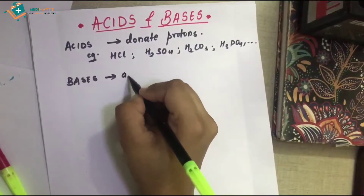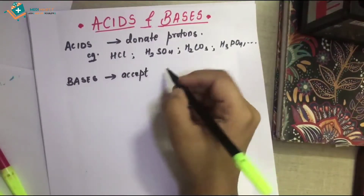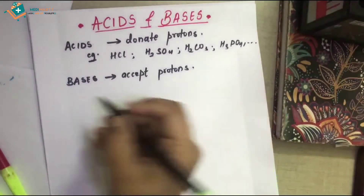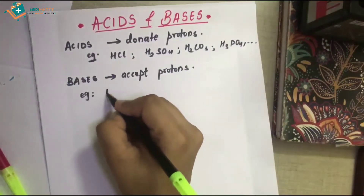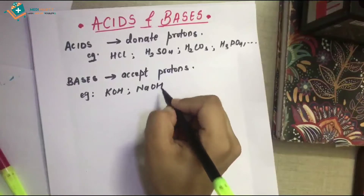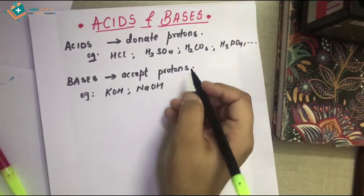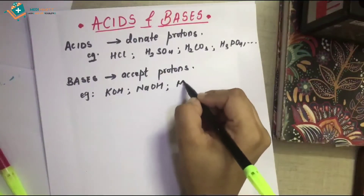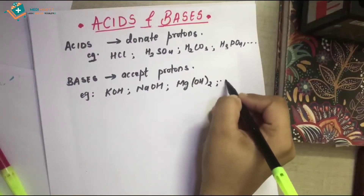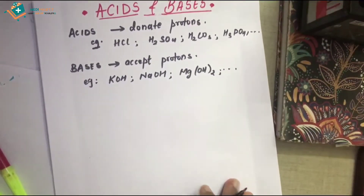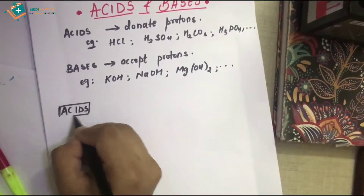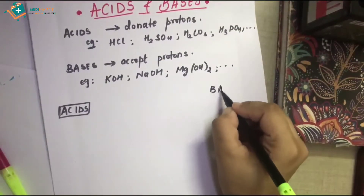Now, what are bases? Bases actually accept protons. They are like poor people who accept from the rich. Examples include potassium hydroxide, sodium hydroxide, CO₃²⁻, magnesium hydroxide, ferric hydroxide, and so on.